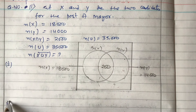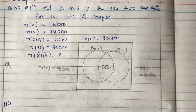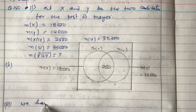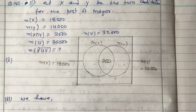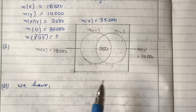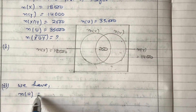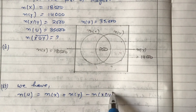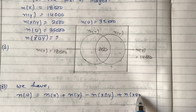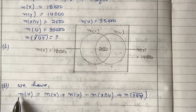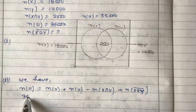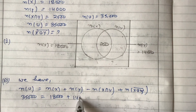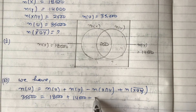Now for question number two, we are asked to find how many people did not cast their vote. We apply the formula: n(U) = n(X) + n(Y) − n(X∩Y) + n(X∪Y)'. So 35,000 = 18,000 + 14,000 − 2,000 + n(X∪Y)'.